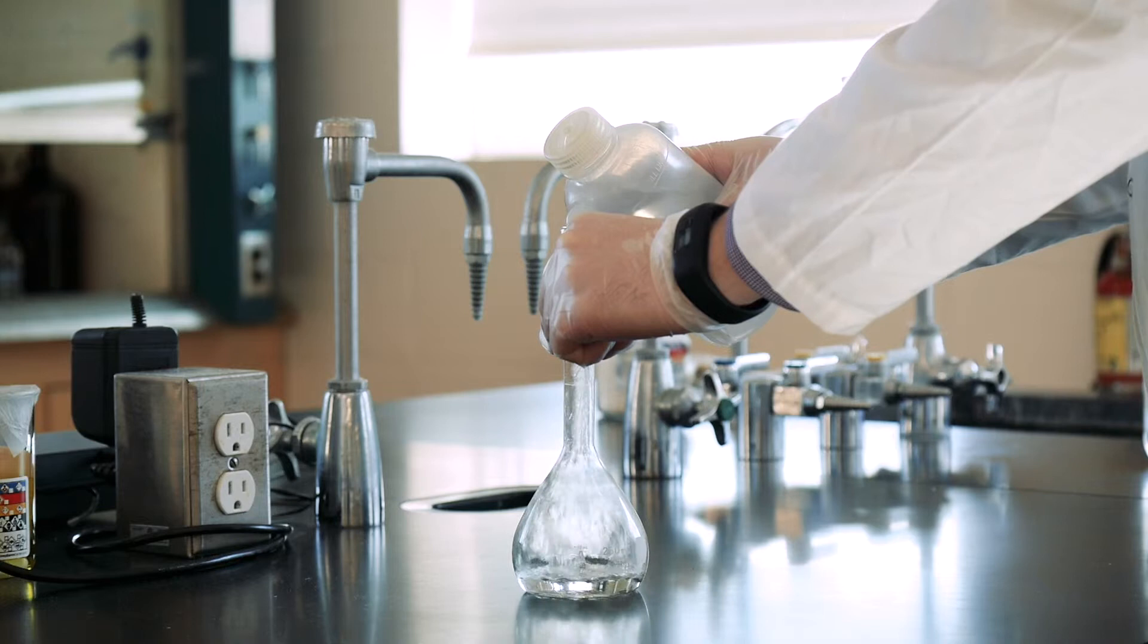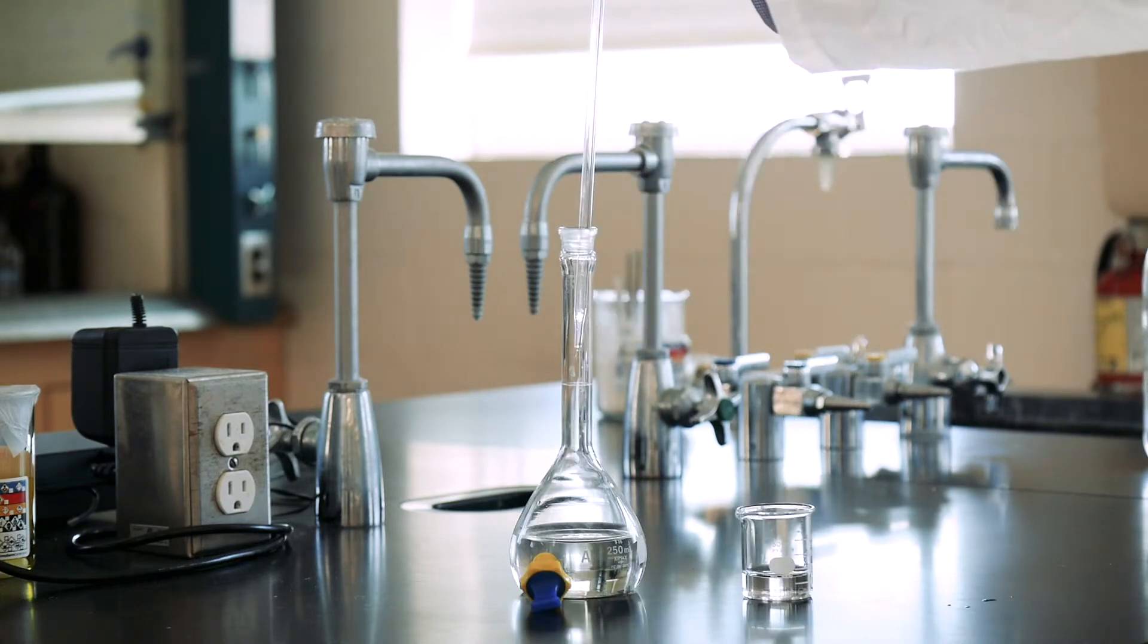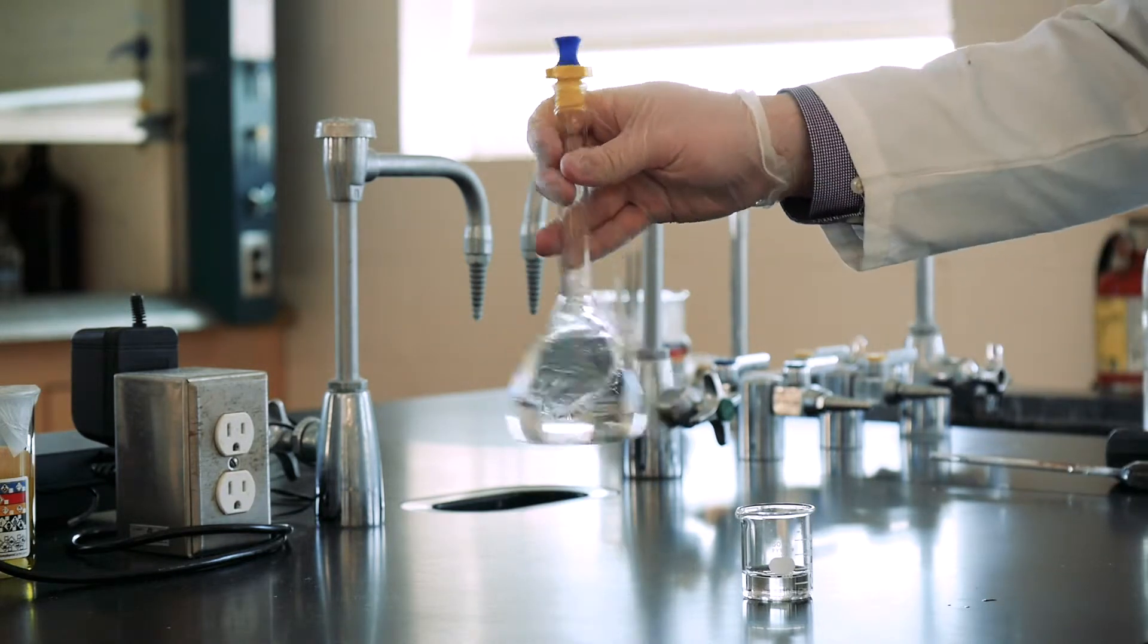Now we're ready to prepare a solution. Start by filling the flask half full with deionized water, and then add your sample to the flask. Swirl the flask a bit before you fill it to the calibration line with deionized water.